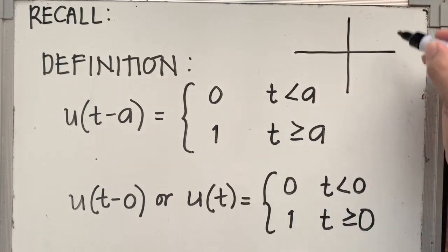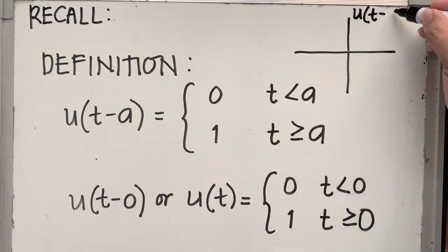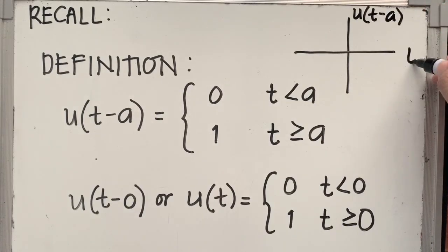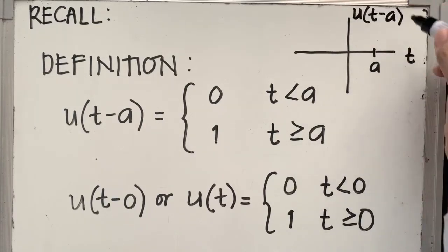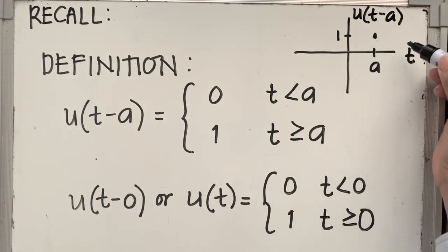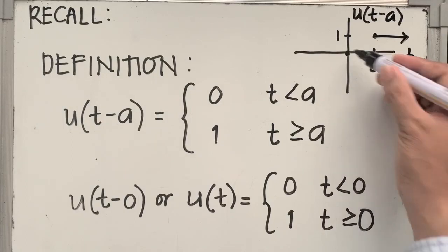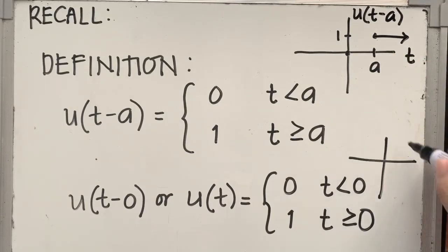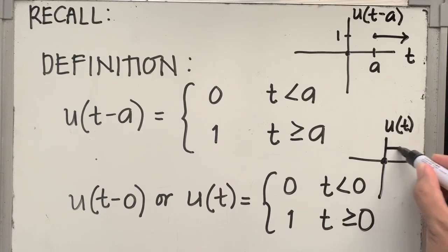Now let me show you the graph of the unit step function. The first is the shifted unit step function, in which you have a value of 1 when t is equal to or greater than a. This is how you sketch the shifted unit step function — the value is 1 in the positive t direction. For u of t, the value of the function is 1 when t is greater than or equal to 0, and this is how you sketch that function.